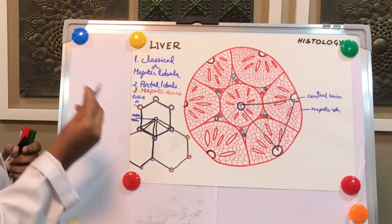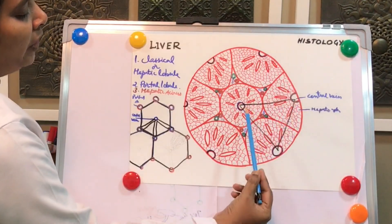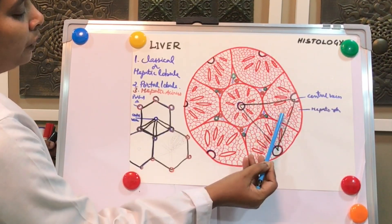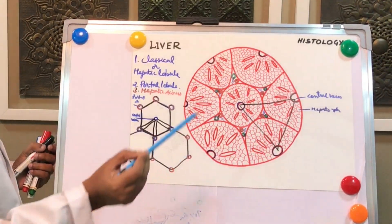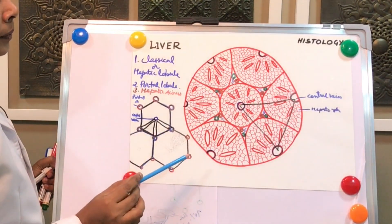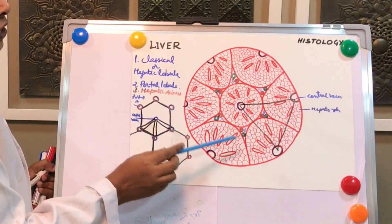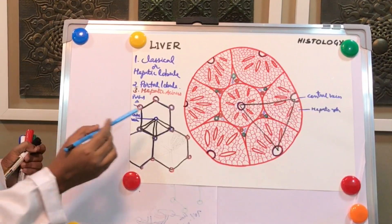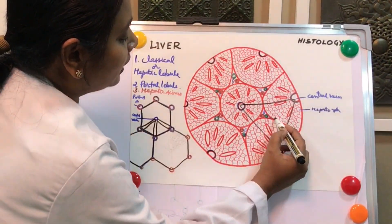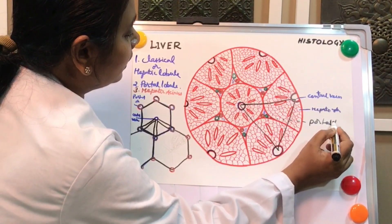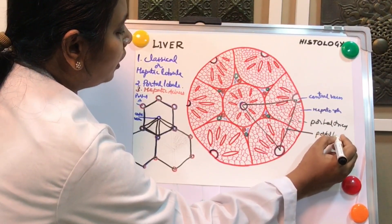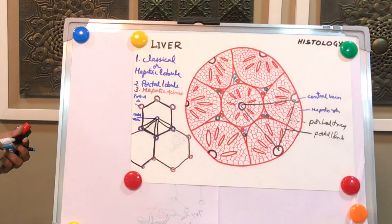The portal lobule is a triangular structure formed by joining the central vein of three adjacent hepatic lobules. In the center of this triangular portal lobule, the main important structure is the portal triad. This portal lobule is otherwise called the nutritional lobule.